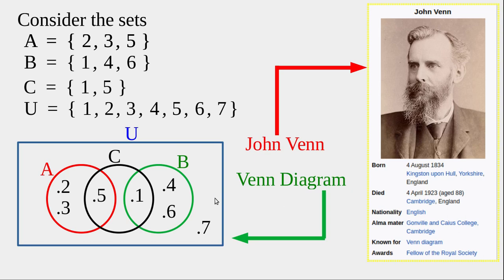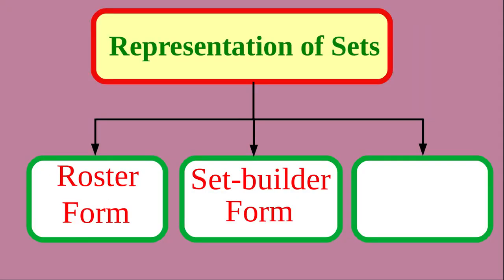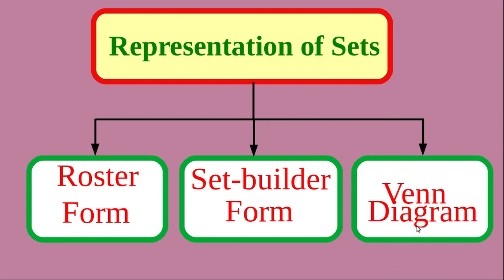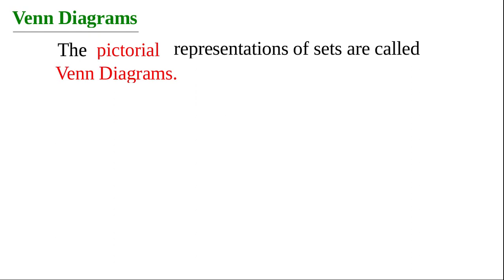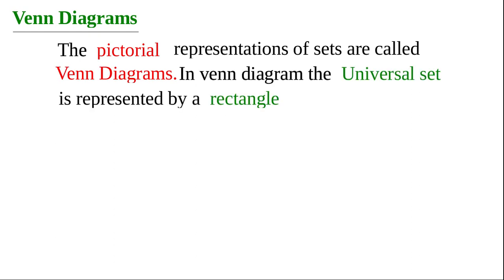A Venn diagram is the pictorial representation of sets — that is, representation of sets using pictures. To complete our flowchart of representation of sets: the first method is roster form, the second is set builder form, and the third method is Venn diagram. We use Venn diagrams when we want to represent more than one set.